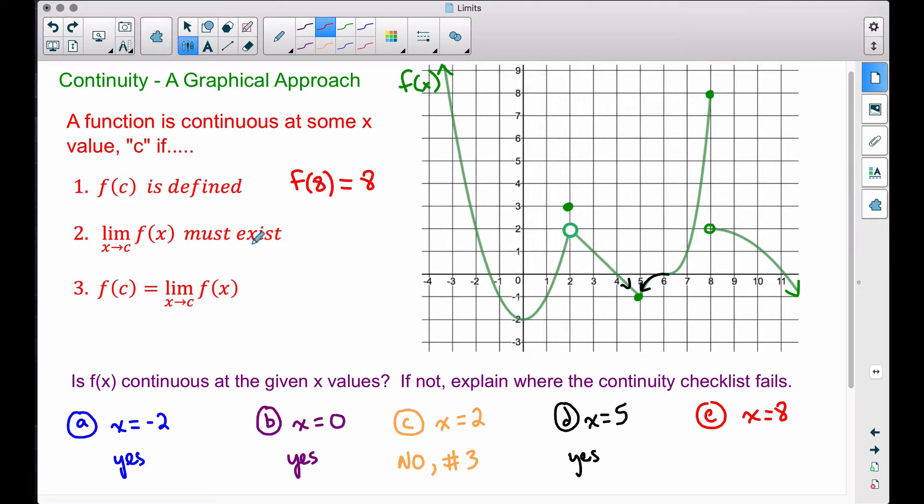Number 2 is where our checklist is going to fail because the limit, as we approach 8, the limit does not exist because the left-handed limit is not equal to the right-handed limit. We are approaching two different y values as we come from the left and as we come from the right.